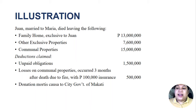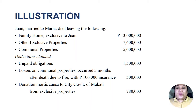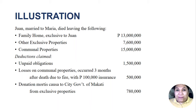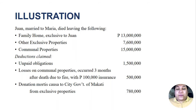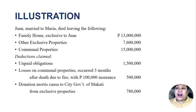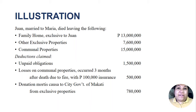There is also a donation mortis causa to the city government of Makati, from the exclusive properties of Juan — since Juan cannot donate from conjugal or communal property without the consent of Maria. So if there are transfers or donations to third persons, whether to a city government or non-government organizations, these should come from the exclusive property. In this case, that was 780,000 pesos. We are going to compute the net taxable estate of Juan, and in the process, compute the share of the surviving spouse.